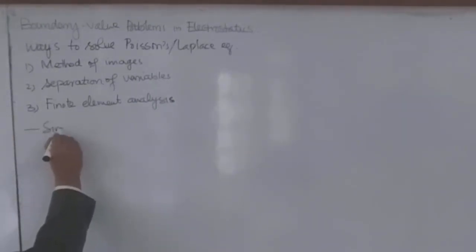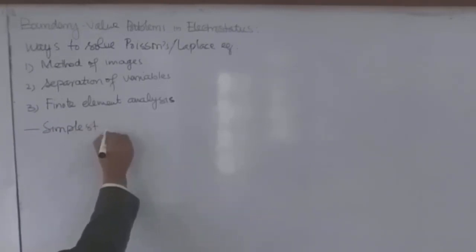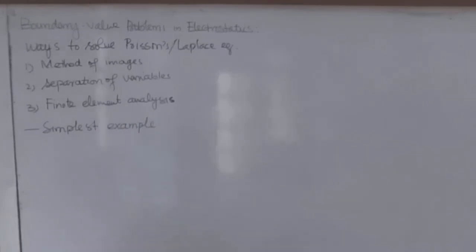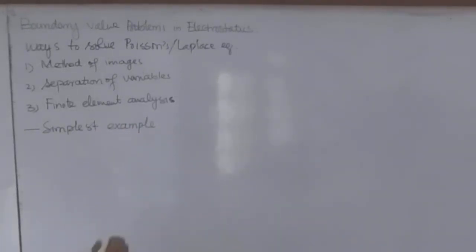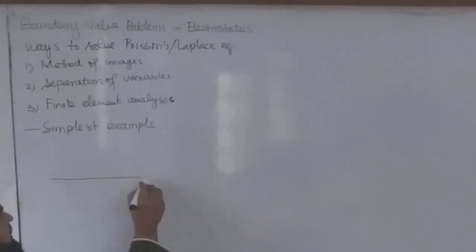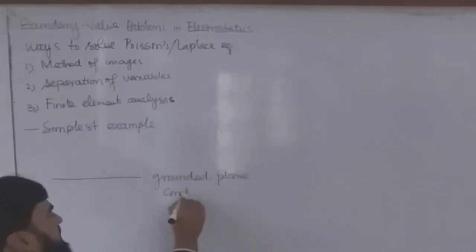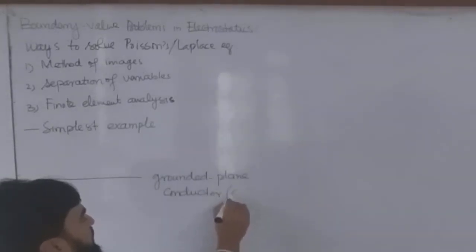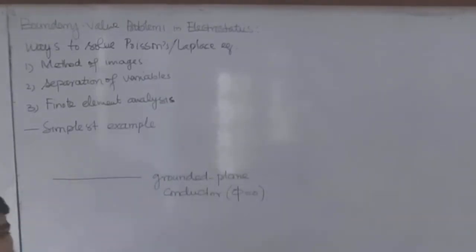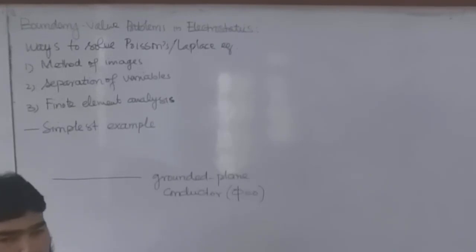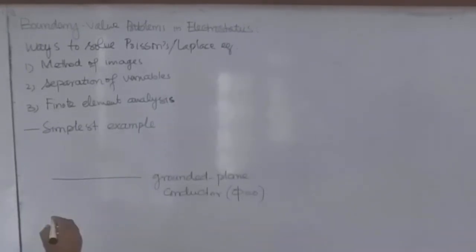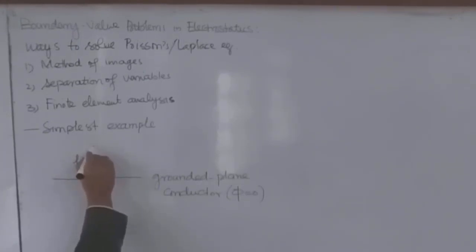The first example is a grounded plane conductor. Grounded means its potential is equal to zero, like it is connected to the earth. We place a charge plus Q at a certain height H above this grounded conductor.